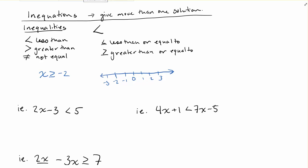Inequations are basically equations, but they give us more than one solution. We're not going to find that x equals exactly 1.35. We might find something where x has more than one solution.